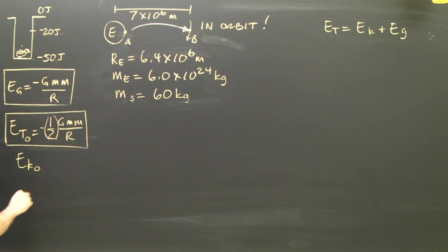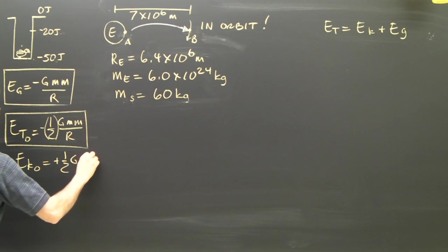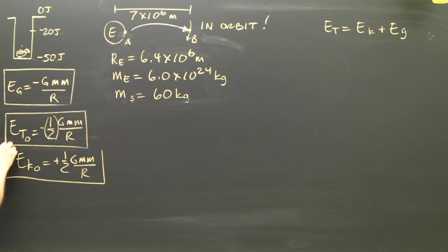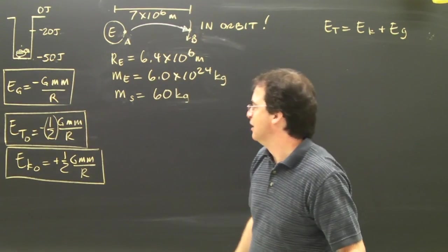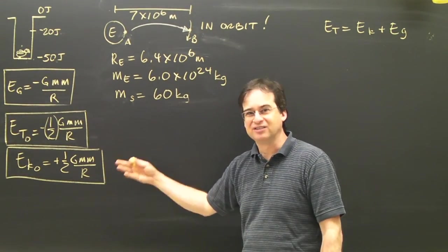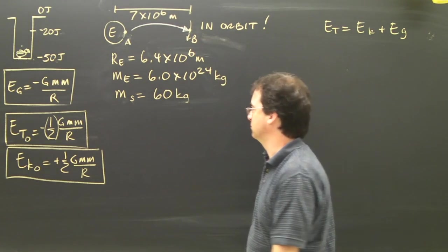The kinetic energy of something in orbit is positive one-half GMm over R. If you want to know why that is, look up the derivation somewhere online. But it's great, it's really simple. A simple formula calculates the kinetic energy and then you can find out how fast something is going.